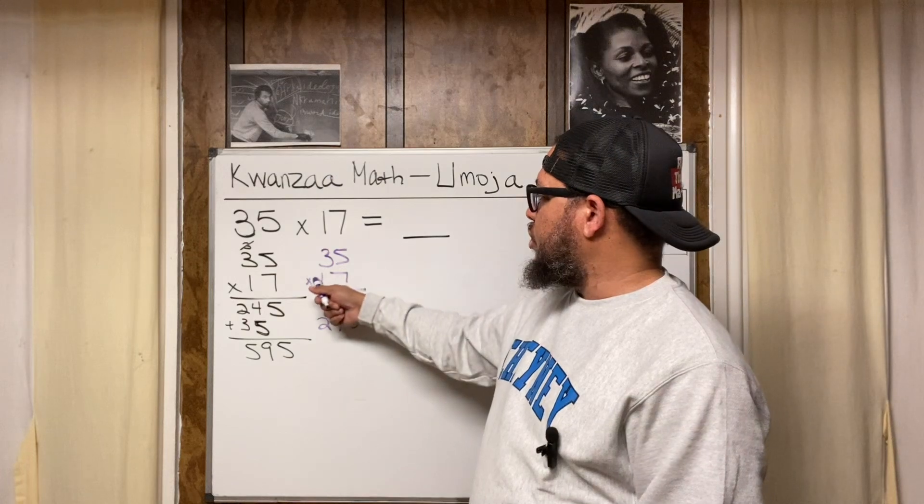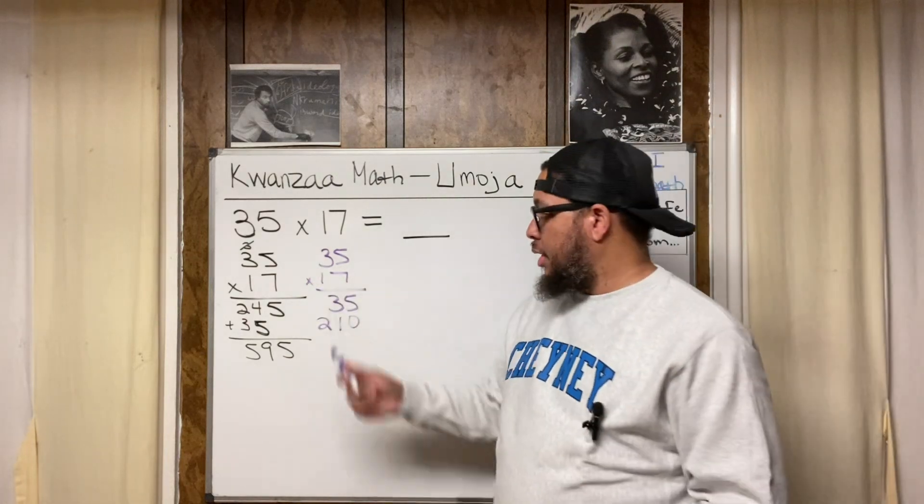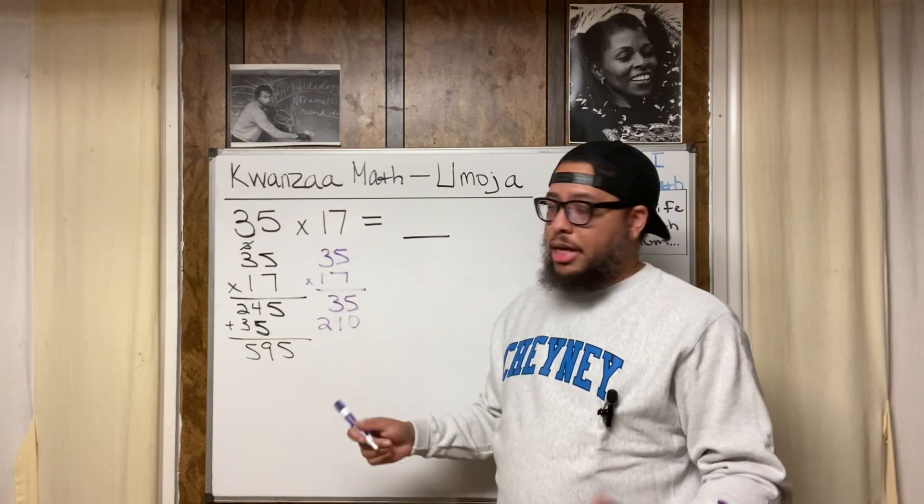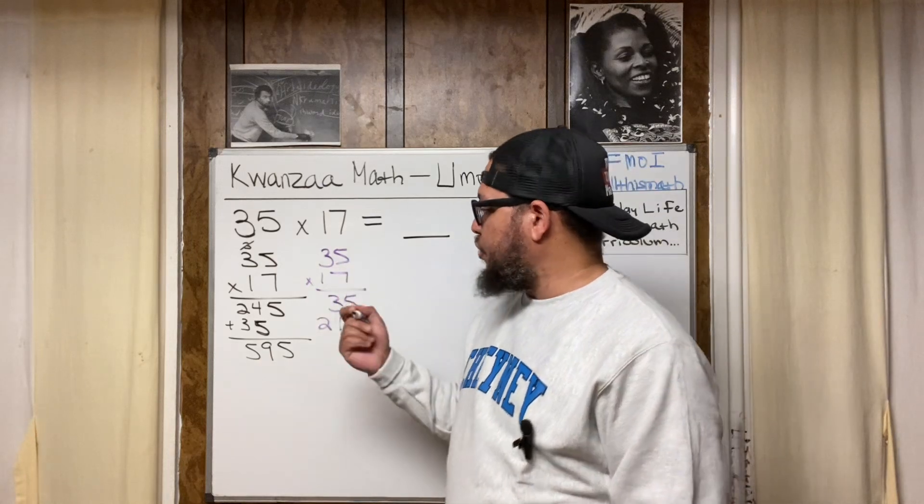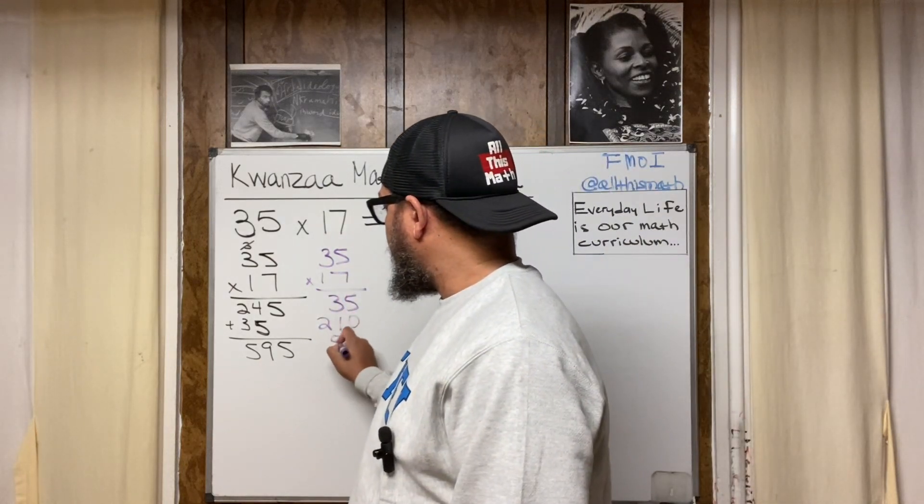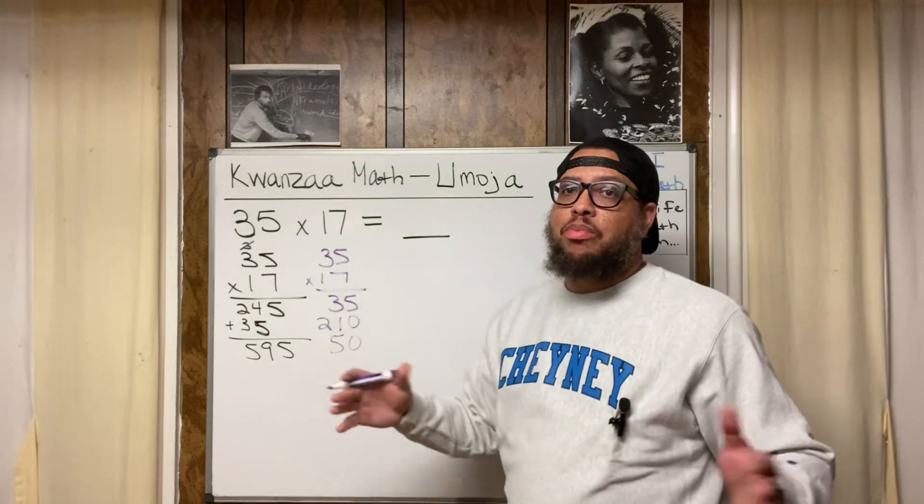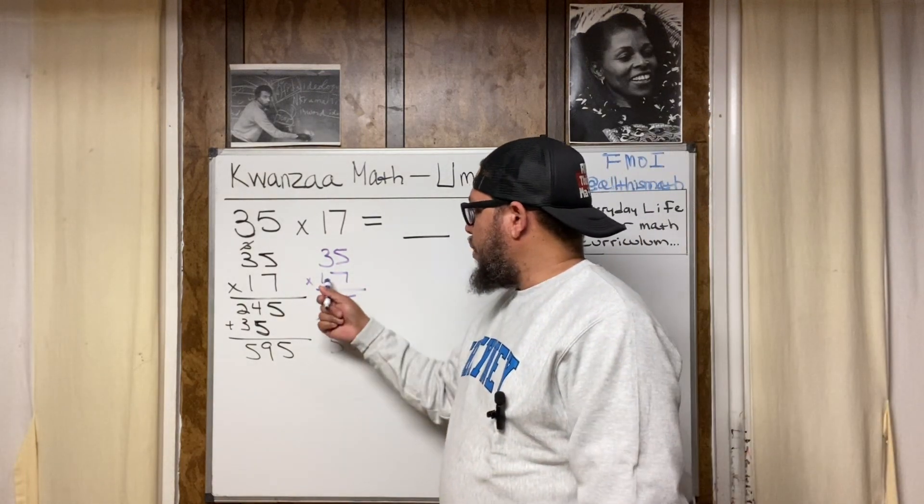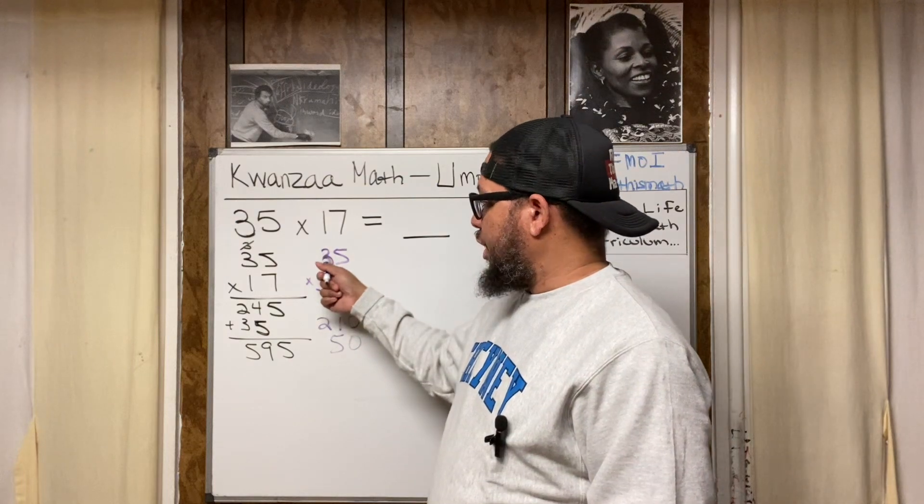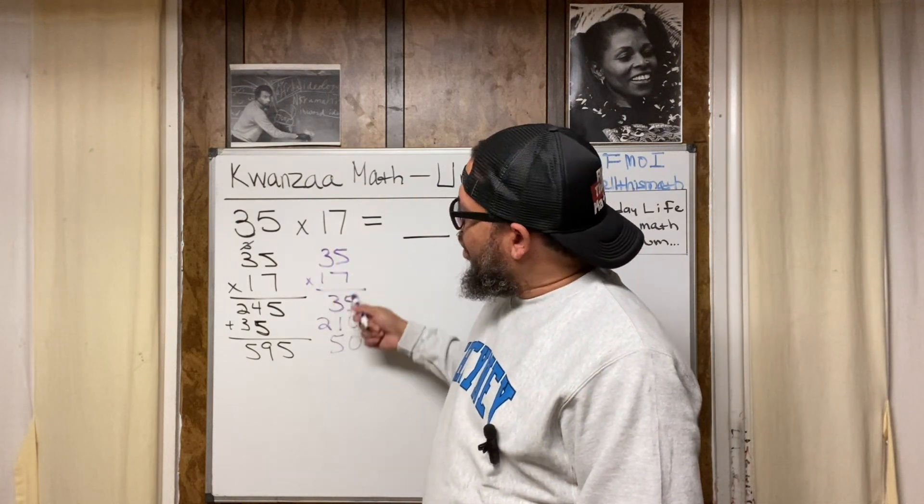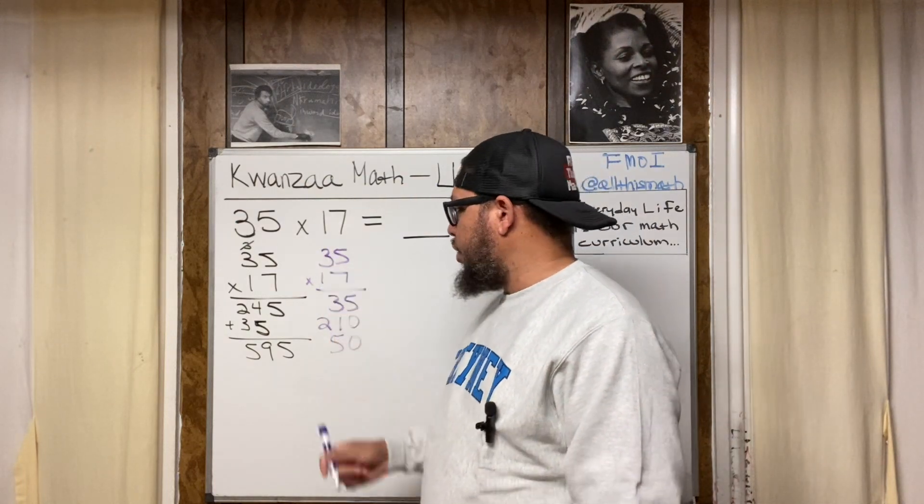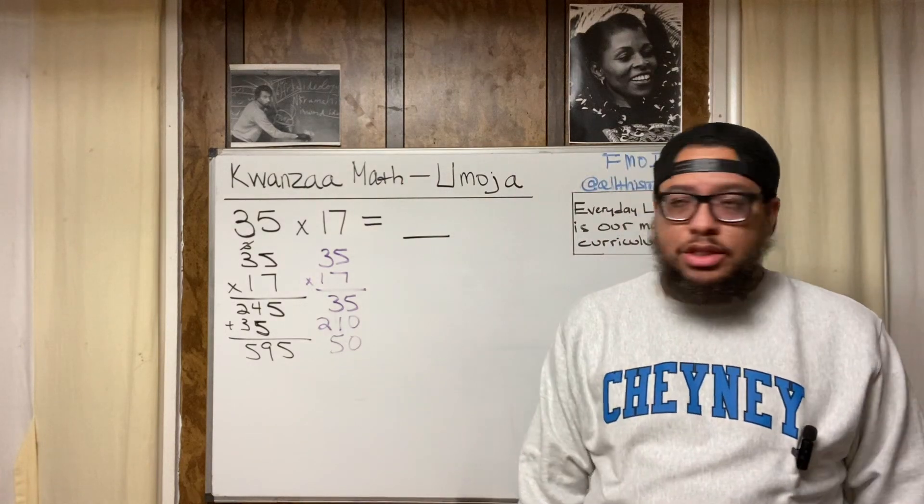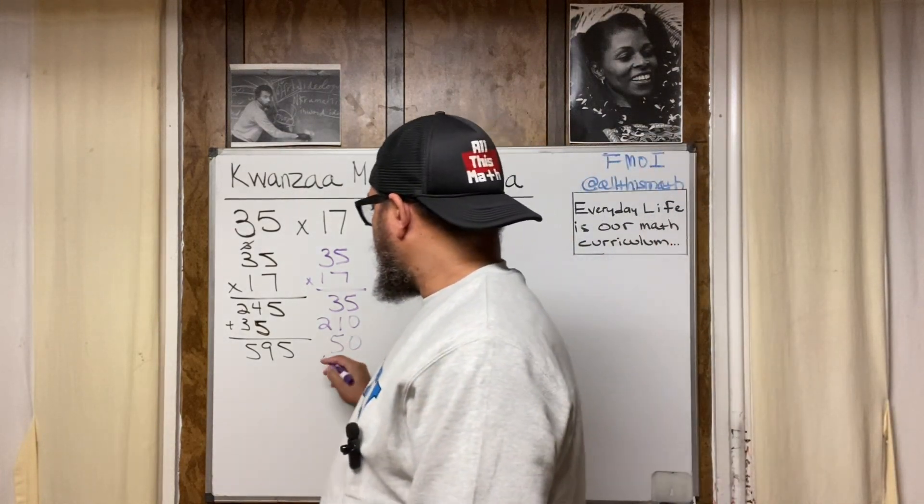Now, I'm finished with the 7. Then I go to the 1. This 1 is really a 10 though because the 1 is in the tens place. Don't forget that. So it's 10 times 5, which is 50. So you put the 50 down here. When we use partial products method, we don't carry nothing. We don't carry nothing. Now, I'm doing 10 times 30 because that 3 was a 30 just like it was when we did 7 times 30. It's still a 30. So 10 times 30 is 300. So I'm going to put 300 right here.